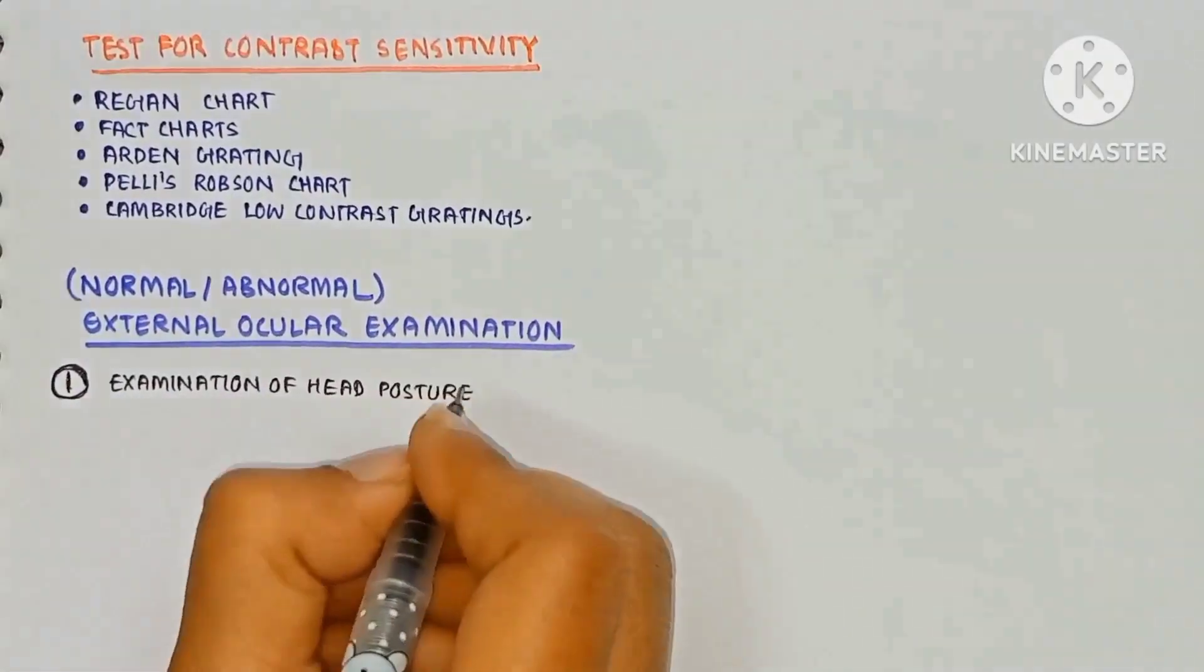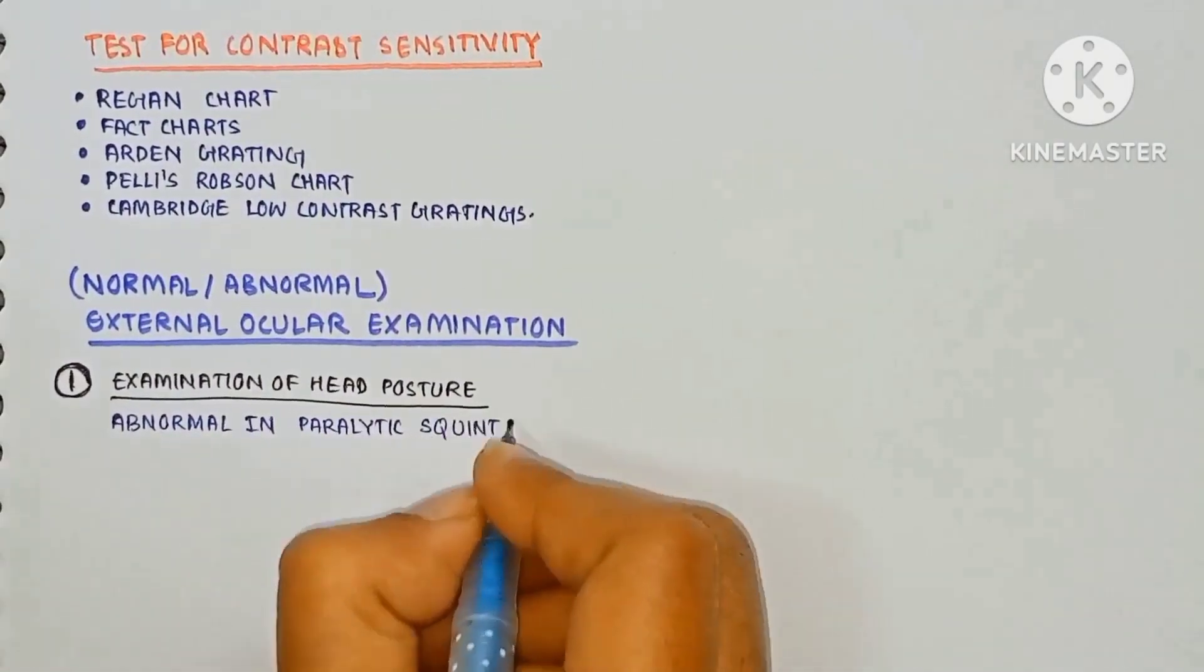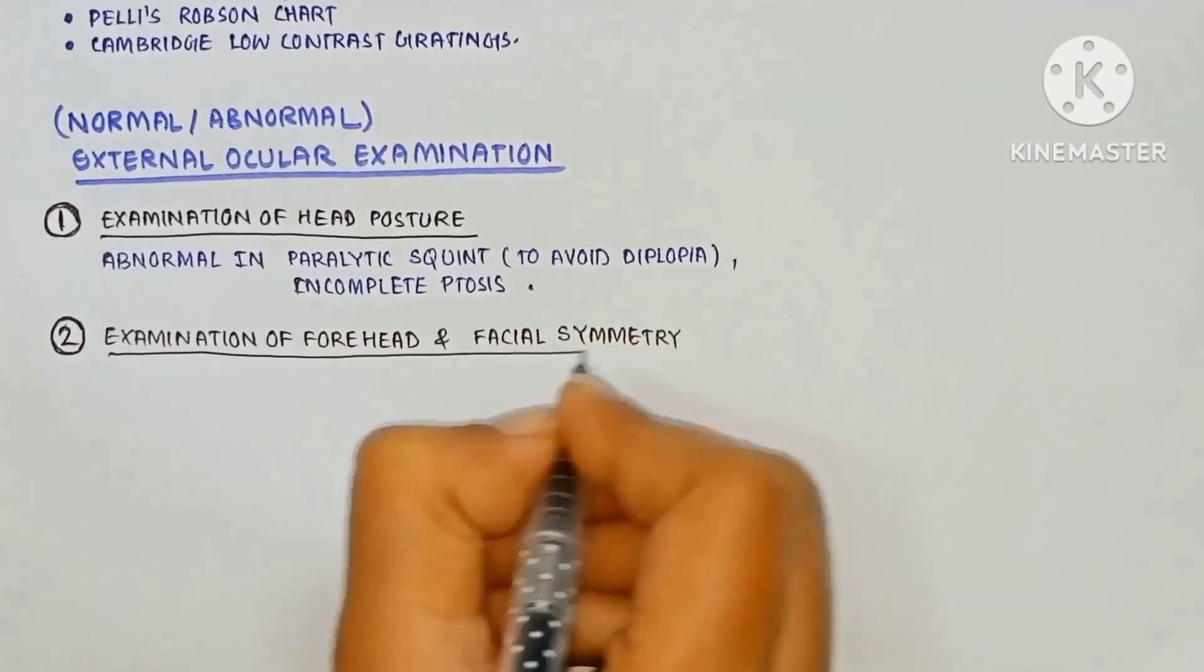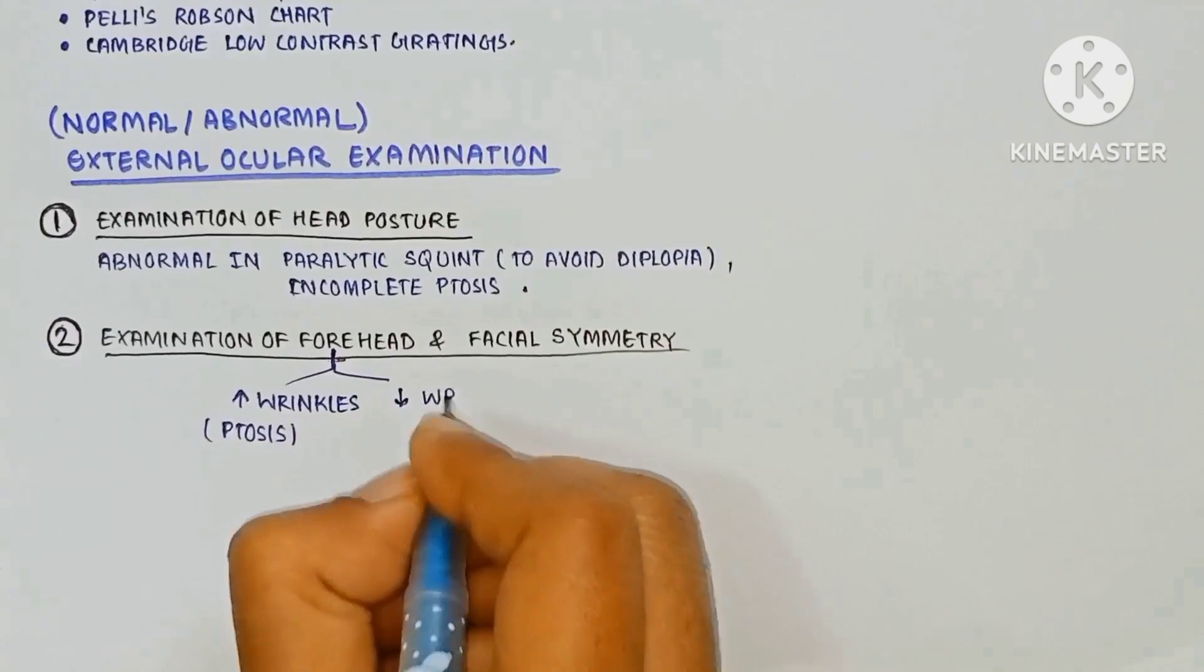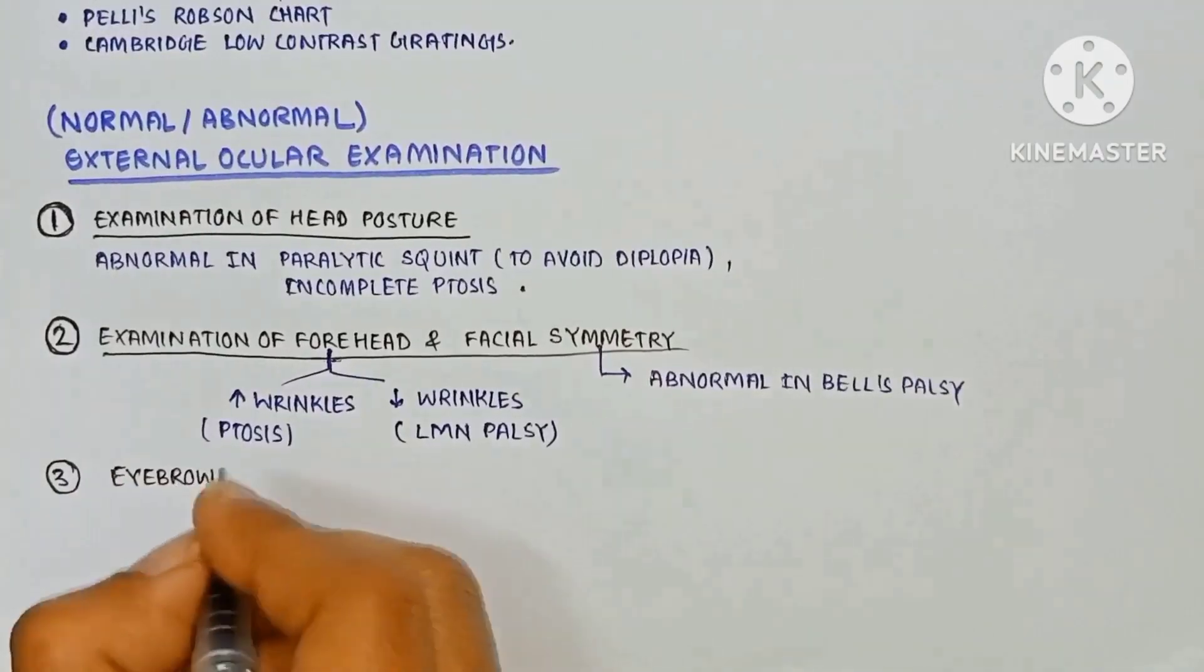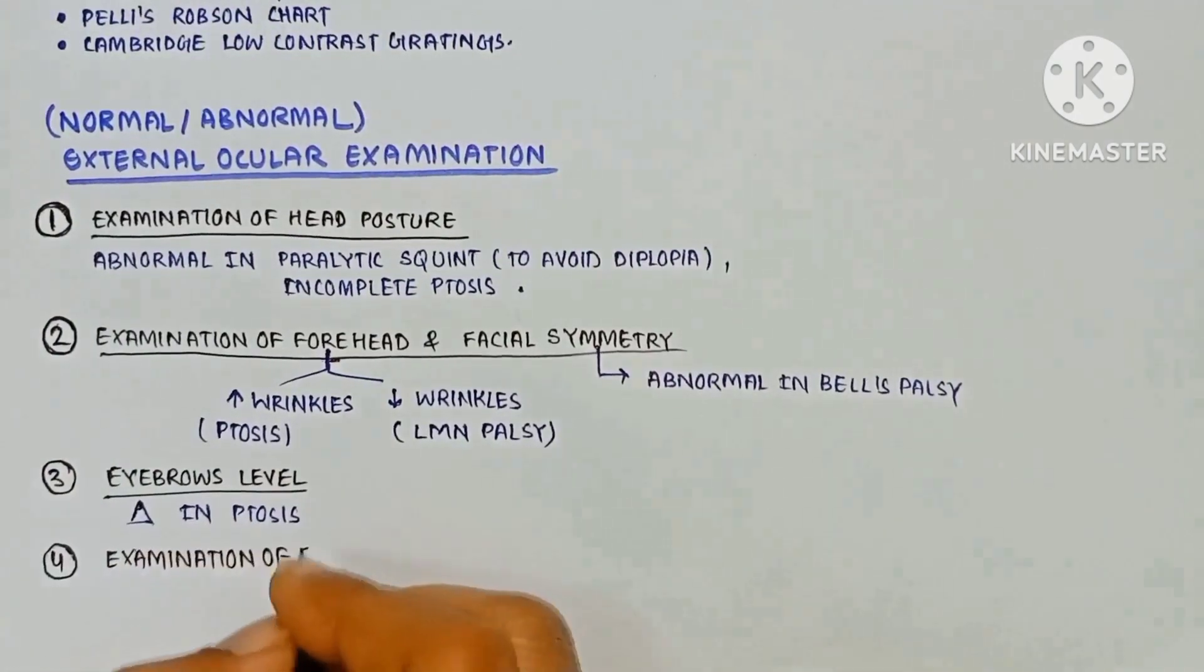First is the examination of the head posture which is abnormal in the paralytic squint to avoid diplopia and incomplete ptosis. Now the examination of the forehead and facial symmetry which is increased wrinkles in ptosis and decreased in lower motor neuron palsy. Facial symmetry is abnormal in Bell's palsy. The eyebrows level is changed in ptosis.